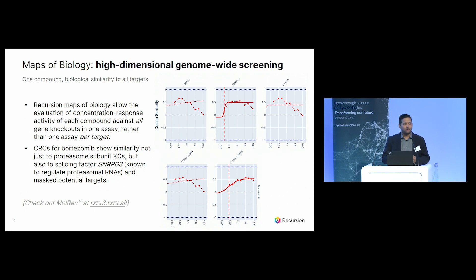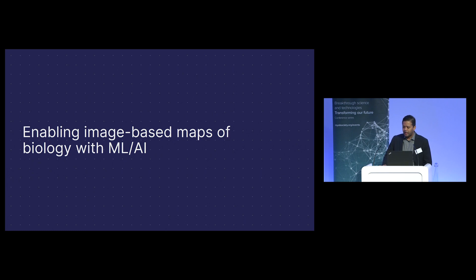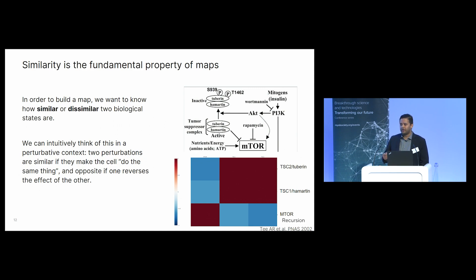So how do we build the technology? How do we use machine learning and deep learning to build these maps? The fundamental property of maps you need to understand is similarity — what we are looking to define is how similar or dissimilar two different cellular phenotypes are from each other. The most intuitive way to understand it is in a perturbative context: two perturbations to a baseline cell state are similar if they make the cell do the same thing, dissimilar if they make the cell do different things, and opposite if they make the cell do opposite things.